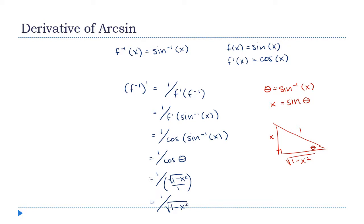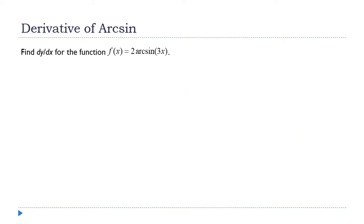And that's it — that's the derivative of the inverse sine: 1 over the square root of 1 minus x squared. Now let's see how we can use this with some examples. Here's the first function: 2 arc sine of 3x.